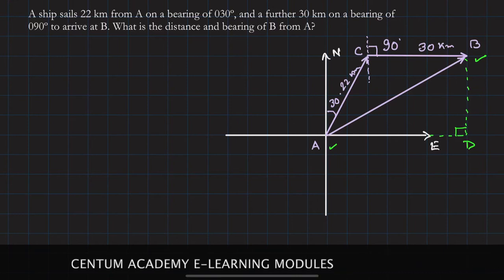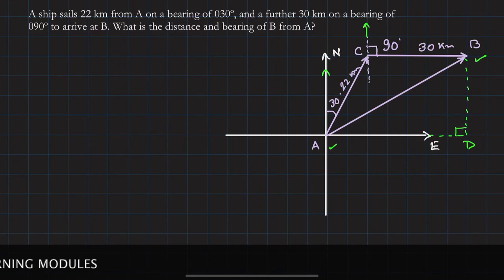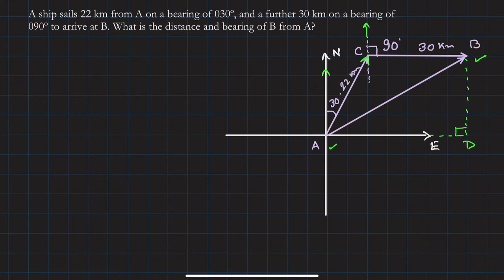For bearing, you have to take the north direction and from there measure the angle. So first, north and 30 degrees gives us the line AC. At point C, the bearing is 090 degrees, so the ship moves towards east. B is due east of C, so I hope how to make the diagram is clear to you.